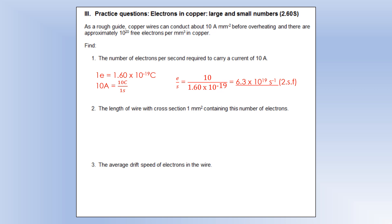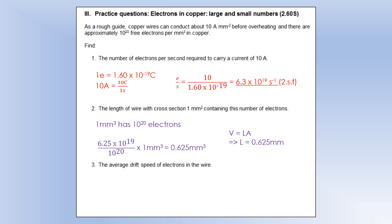Now the length of wire with cross-sectional area 1 millimetre squared containing this number of electrons. We know that 1 millimetre cubed contains 10 to the 20 electrons, so if we take the number we've calculated and divide by 10 to the 20, that gives us the volume that has the electrons we need. With a cross-sectional area of 1 millimetre squared, that gives us the length as 0.65 millimetres.